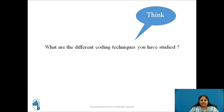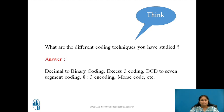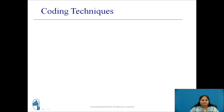Now before actually starting with the Shannon-Fano coding method, think for a while what all different coding methods you have used or studied before. The most common coding techniques that we know are decimal to binary coding, accessory coding, encoders, Morse code, etc. In all these processes we convert one form of representation into another form. So, what are these coding techniques all about and why we use them? Let us first understand this.